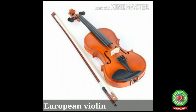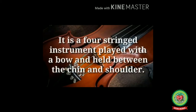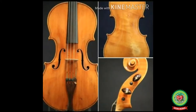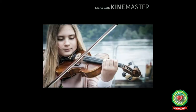First one is the European violin — a 17,000-year-old musical instrument that was found and still works. The violin is a wooden string instrument. Most violins have a hollow wooden body. It is a four-stringed instrument played by drawing a bow across its strings and held between the chin and shoulder.